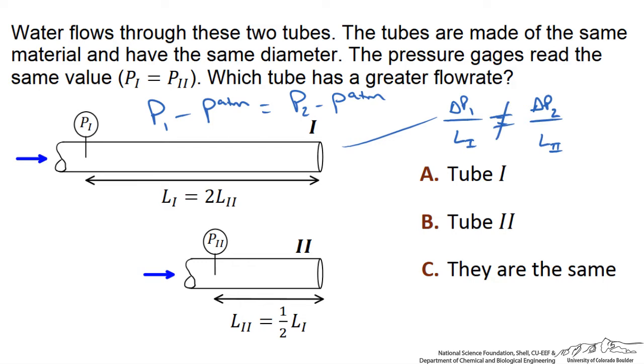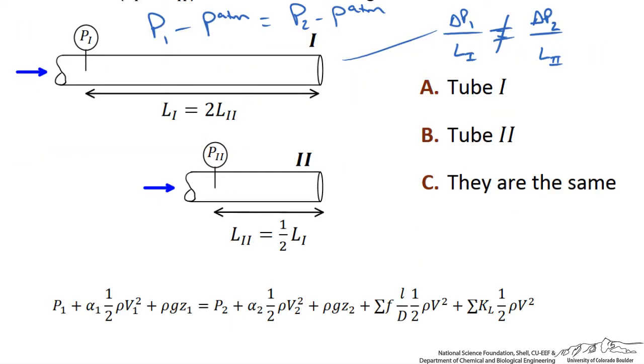So, how can we use this information? Let's take a look at an energy balance here, and we can rewrite this. If we get rid of the velocity components, because there is no change in velocity along the pipe, no change in elevation along the pipe, and no minor losses,